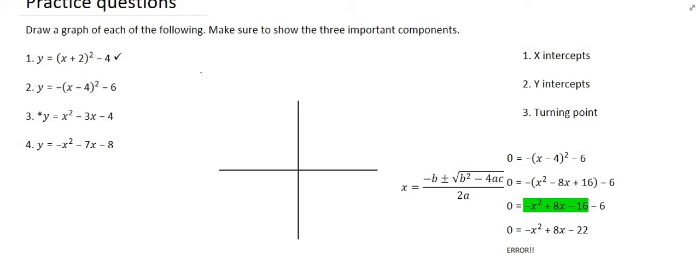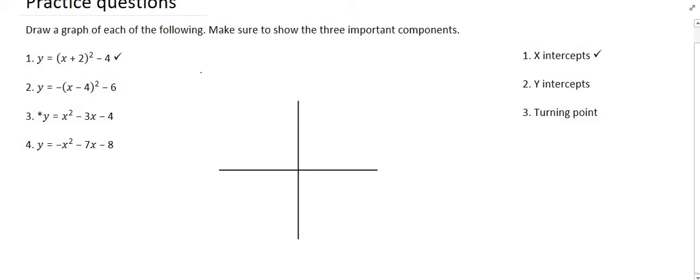We now continue to the y-intercept. To find it we make x equal to zero, plug that into the calculator, and we get a value of negative 22. We can then draw that on the diagram. Please note that you don't have to make a huge graph going 22 lines down — teachers are most interested in that you have the correct value.